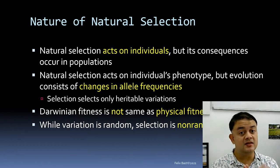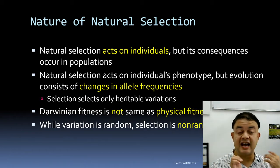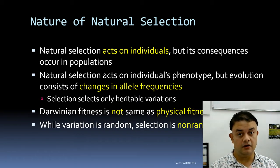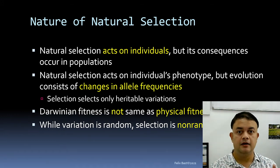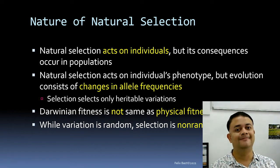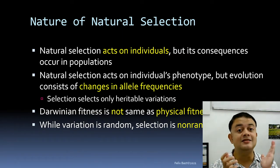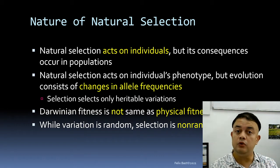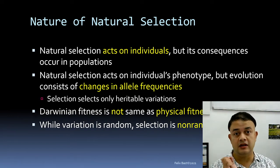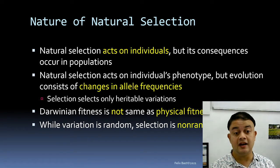Mutations happen randomly on a DNA molecule, but the survival of those mutants is not random. Calling natural selection a random process is incorrect — natural selection is never random, because it is a selection. Only individuals with favorable heritable variants survive to reproduce and transmit genes to the next generation.